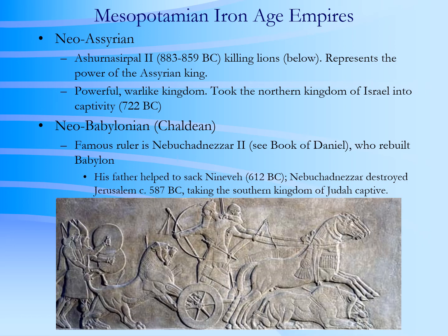Two Mesopotamian Iron Age empires include the Neo-Assyrian and the Neo-Babylonian or Chaldean empires. The Neo-Assyrian was a very warlike kingdom that captured the northern kingdom of Israel in 722 BC, and then later it in turn was defeated by the Neo-Babylonian or Chaldean empire by the father of Nebuchadnezzar. Nebuchadnezzar then ascended to the throne and was responsible for destroying Jerusalem and its temple around 587 BC.